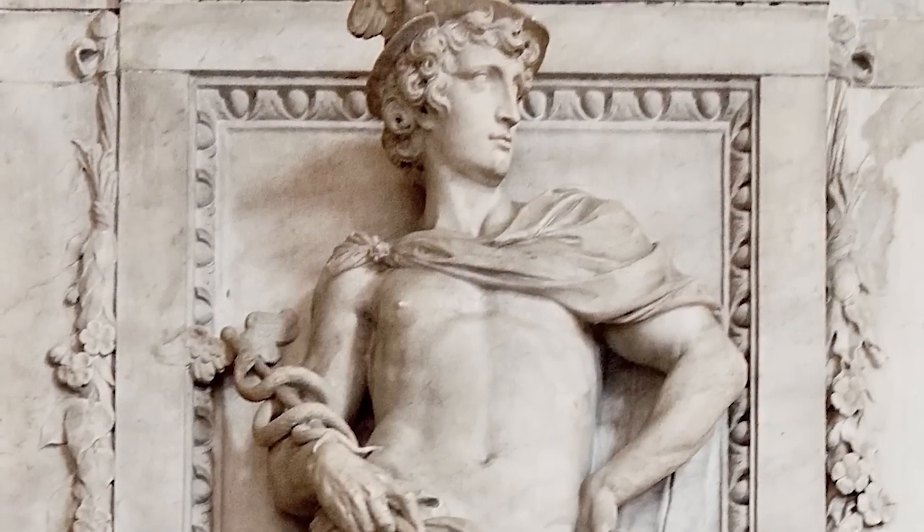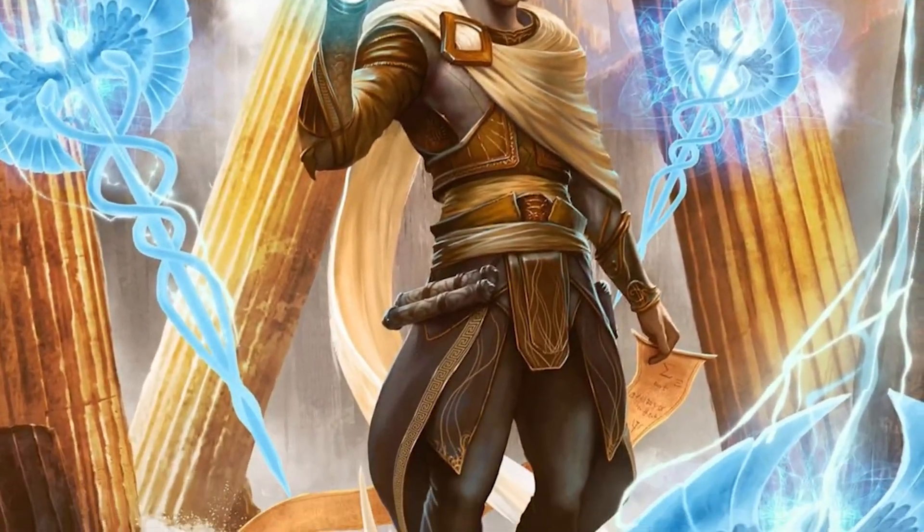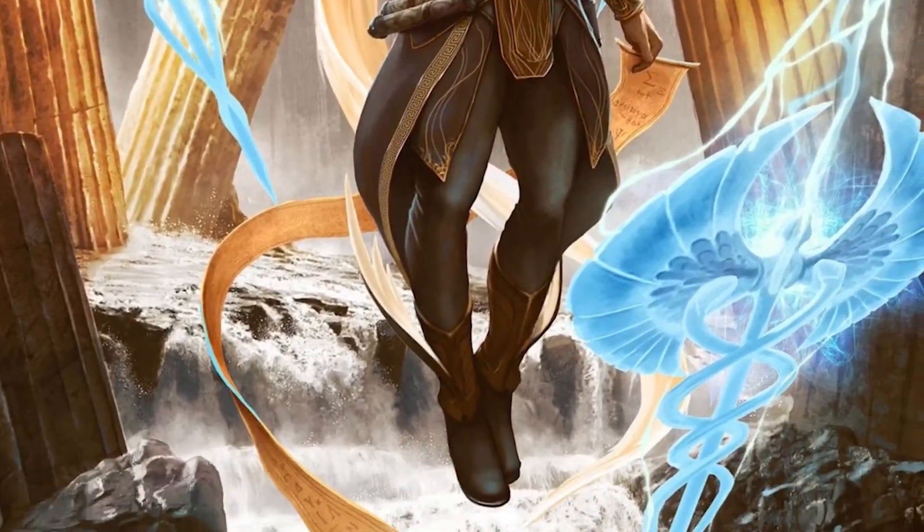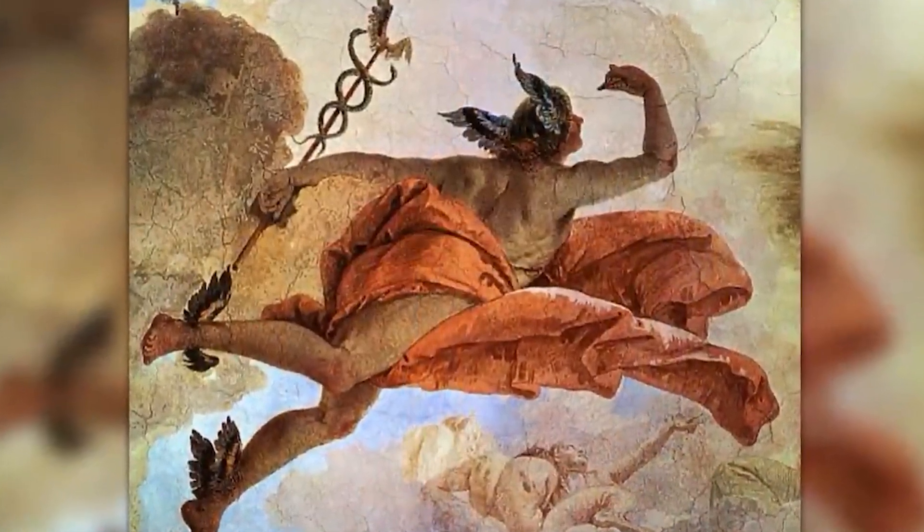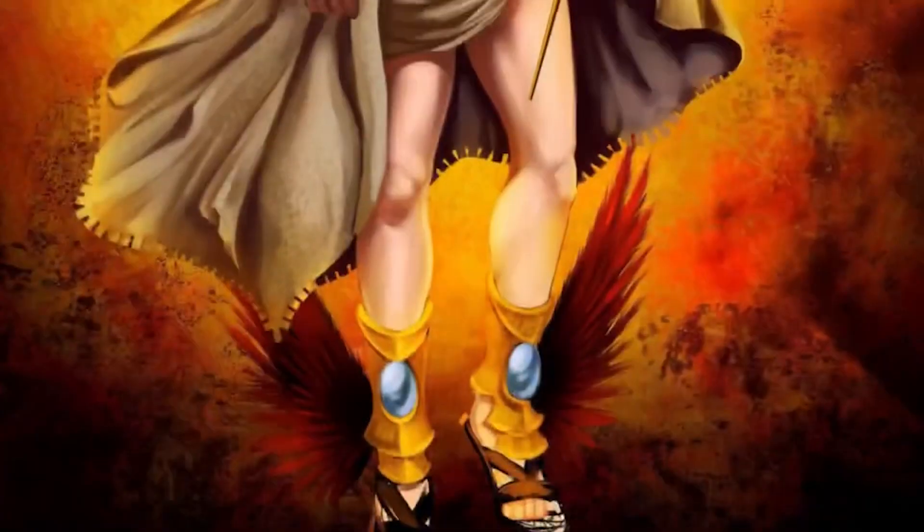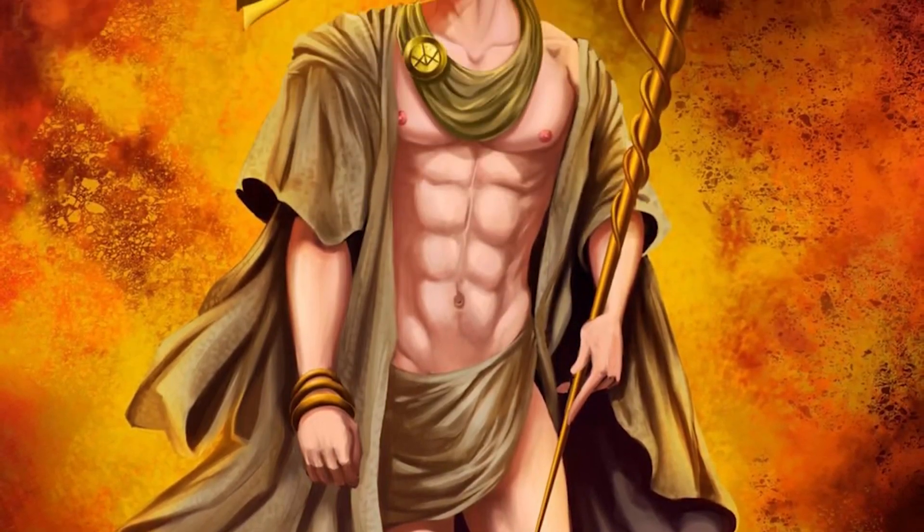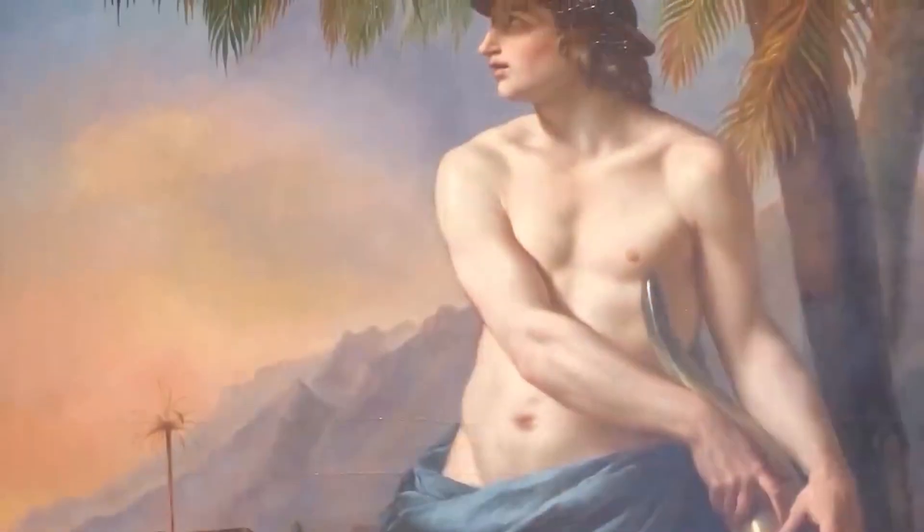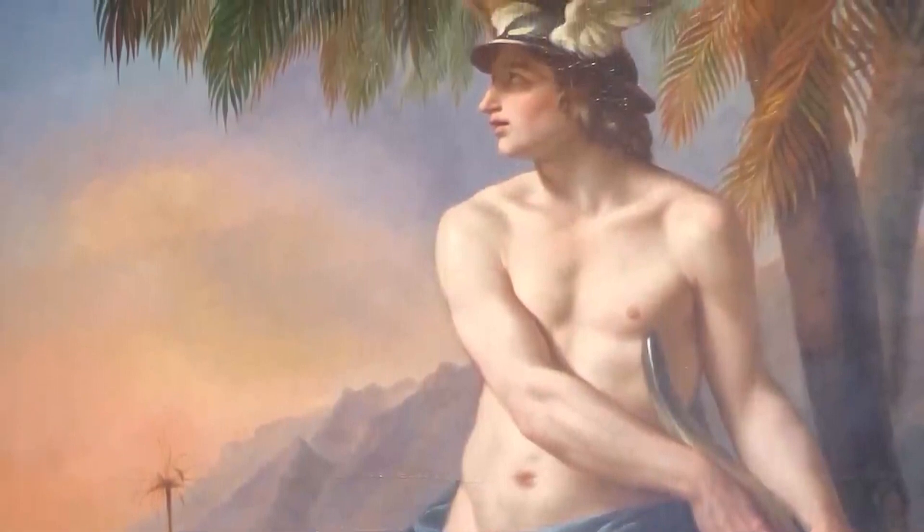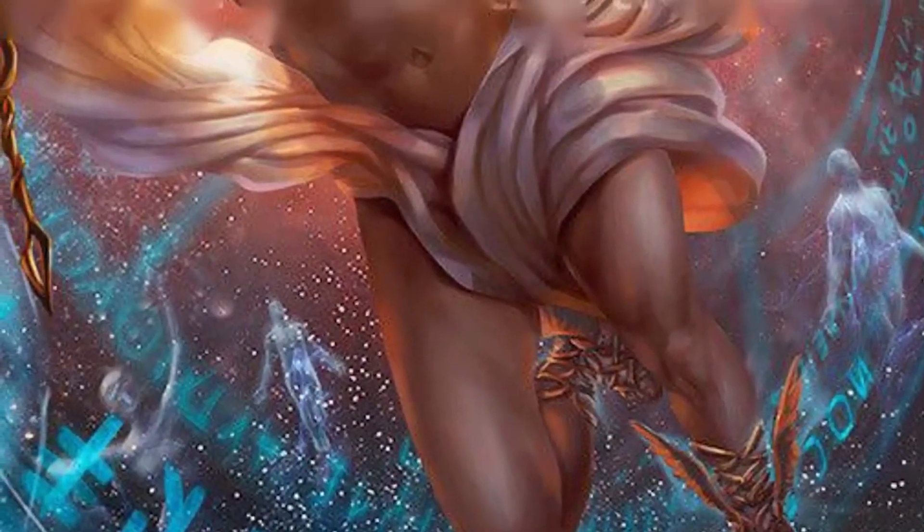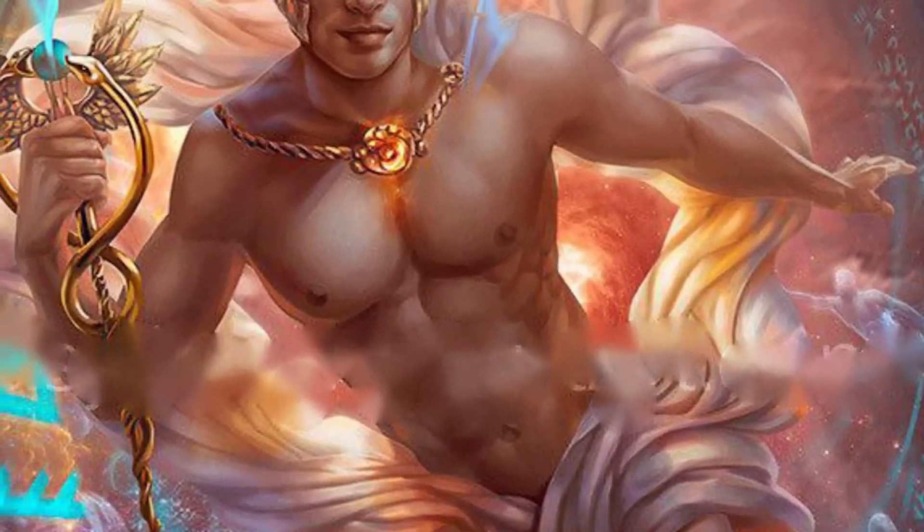The naming of the planet Mercury can be attributed to its rapid movement across the sky, reminiscent of the god's swift and graceful nature. This connection between the celestial and the divine underscores the profound impact that celestial objects like Mercury have had on human storytelling, beliefs, and cultural heritage throughout history.